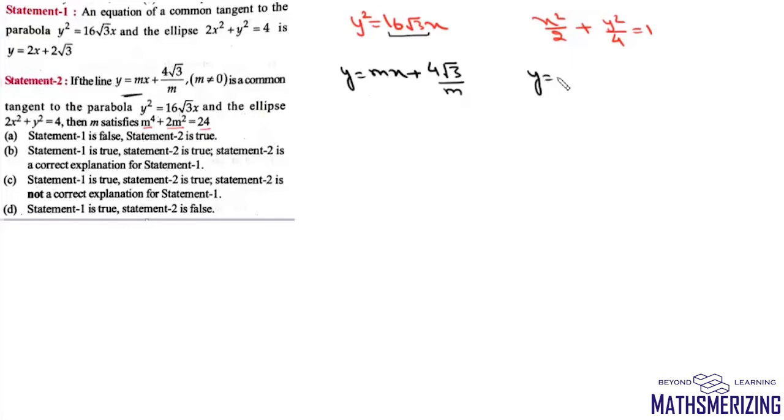And then for this ellipse it will be y = mx ± √(a^2m^2 + b^2). Now for a common tangent, these two lines will be the same.